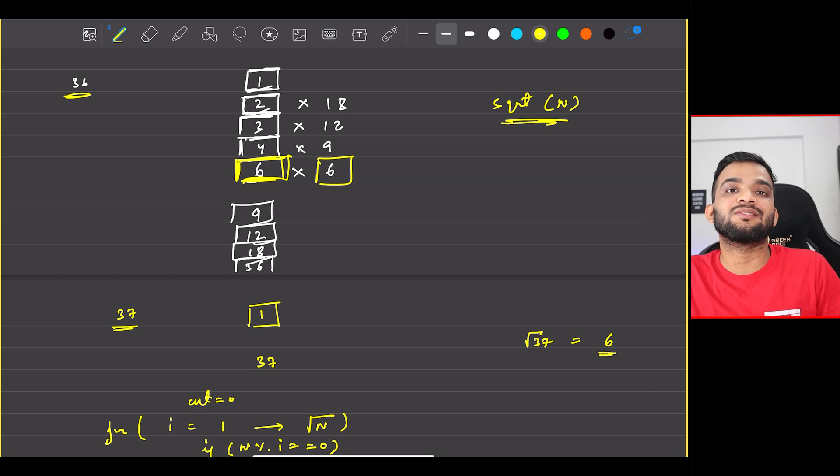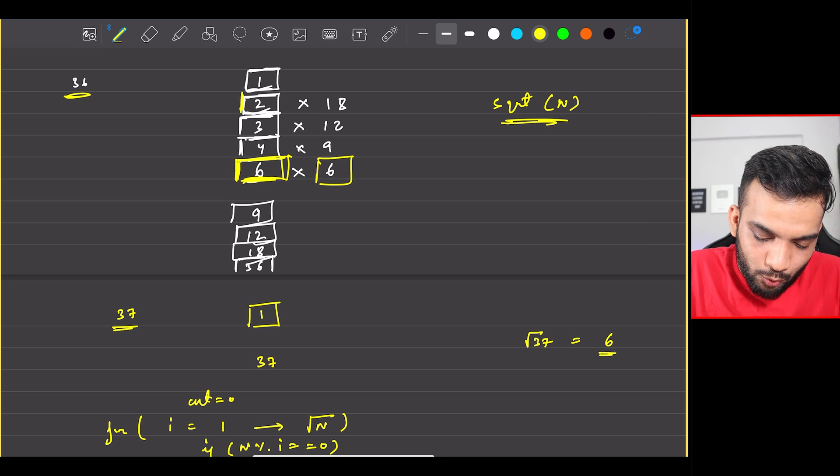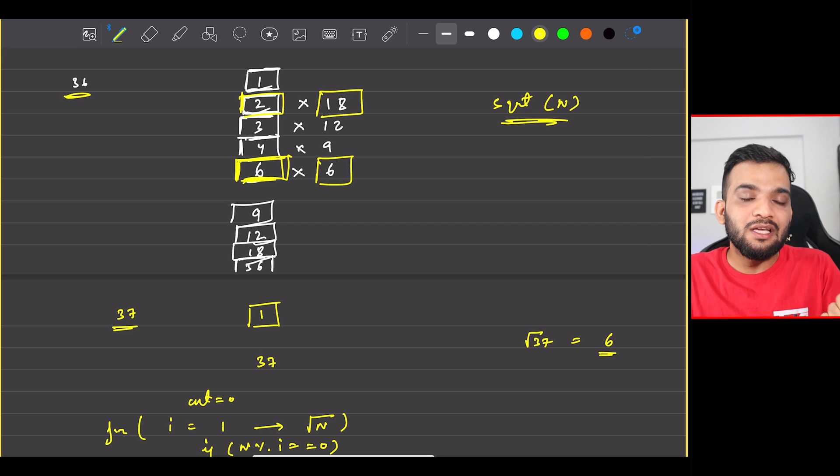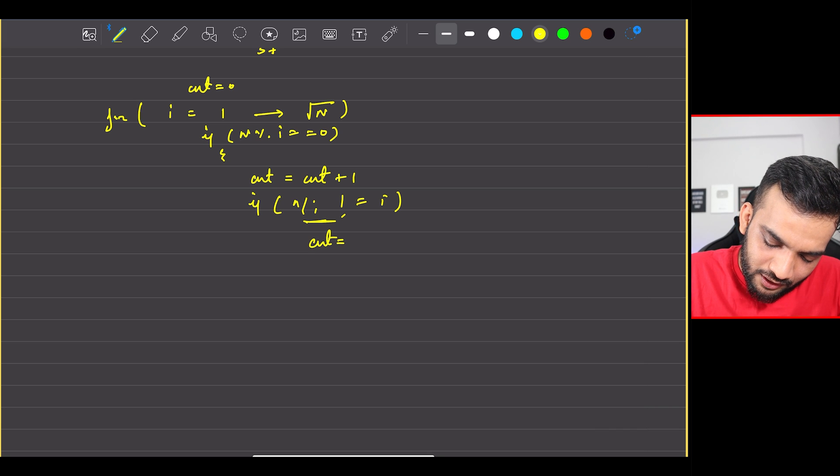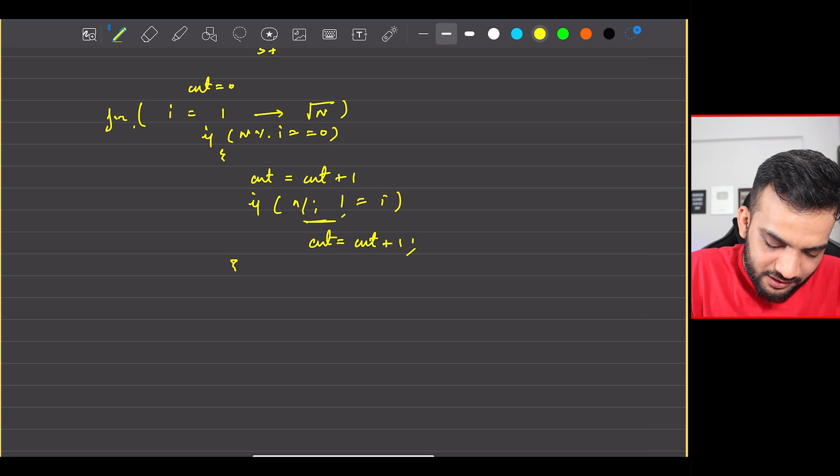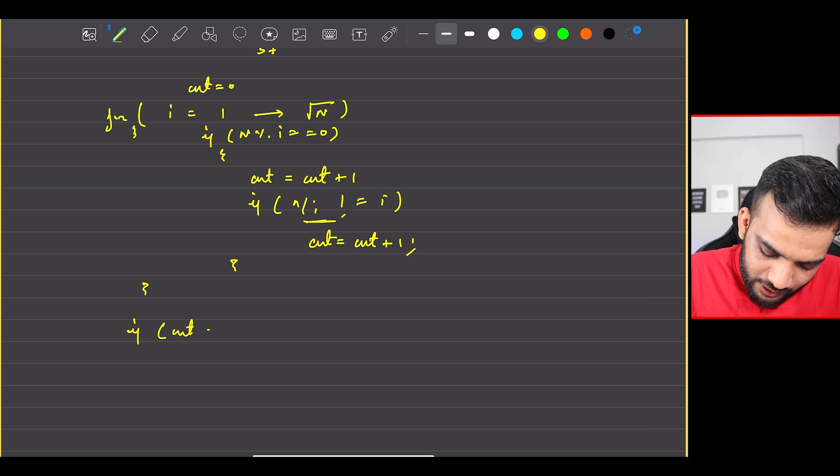But if it is 2, the other divisor is 18, so I need to count 18. So please make sure you have a check. Counter will again increase by counter plus 1. The for loop can start and end here, and at the end, if counter's value is 2, it is prime, or else it is not a prime.